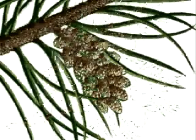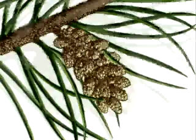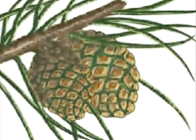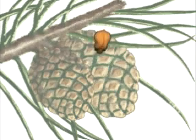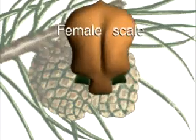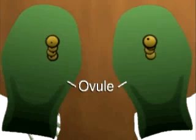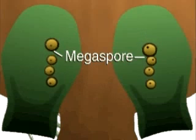The adult sporophyte, the pine tree, develops male and female cones on separate branches. Female cones develop two ovules on the upper surface of each cone scale. Each ovule contains haploid megaspores.